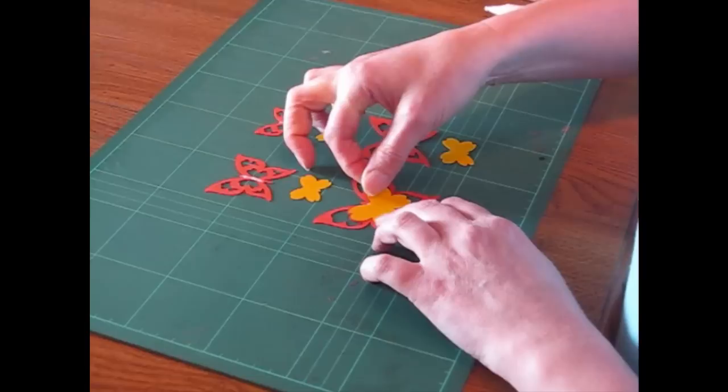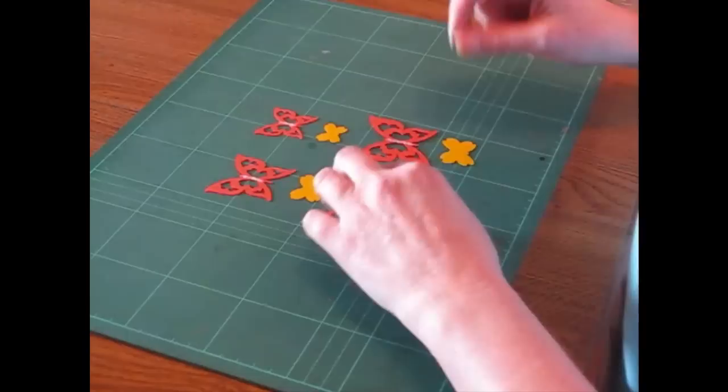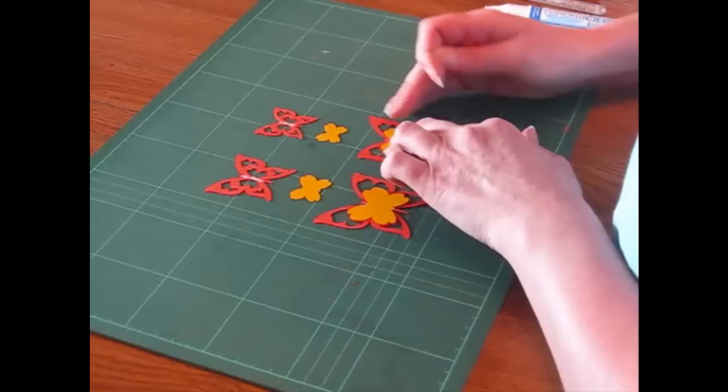I put just a little bit of PVA glue along the centre of the butterfly body and then carefully line up the backing. Once I've stuck them all into position, I'm just going to put them to one side for the glue to dry.